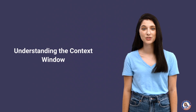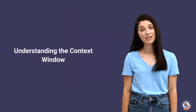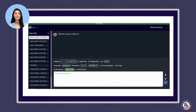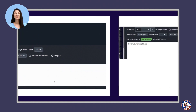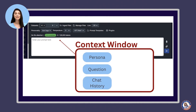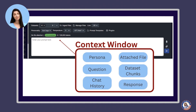Welcome back for an AskSAGE tutorial. Today we're going to dive into the concept of the context window and how it affects the performance of large language models. The context window is defined by a formula that includes the persona, which by default is system generated but can be changed using the personality drop-down, the question you query, a bit of the chat history, a file if attached to the prompt, dataset chunks, and the response. These elements come together to form the context in which the large language model operates.